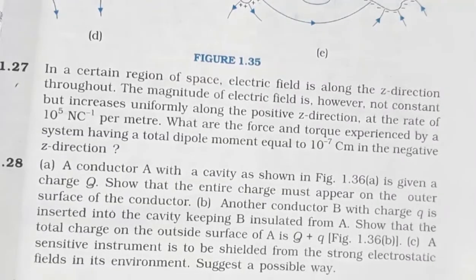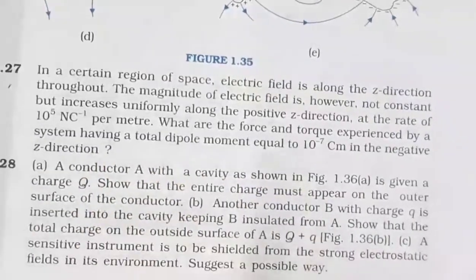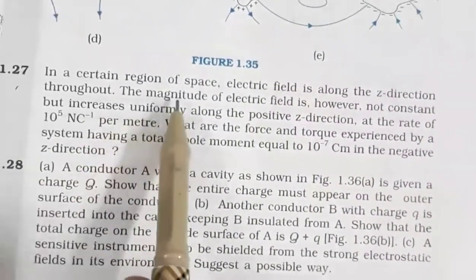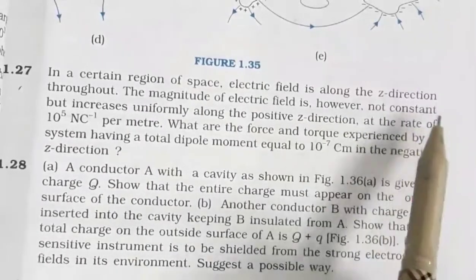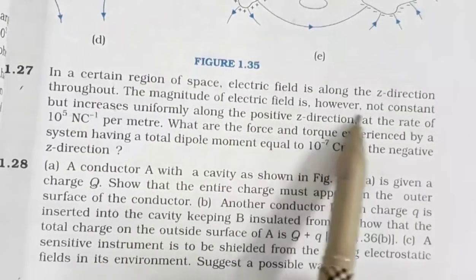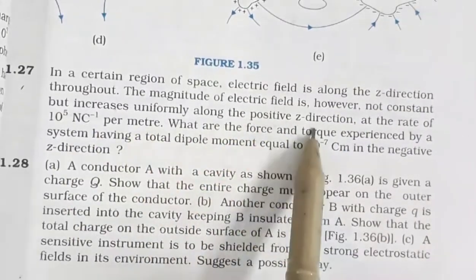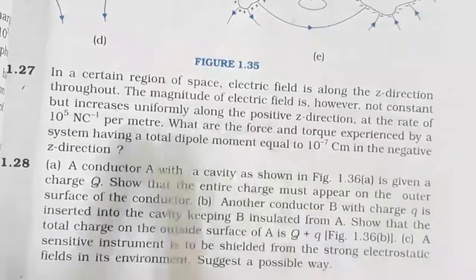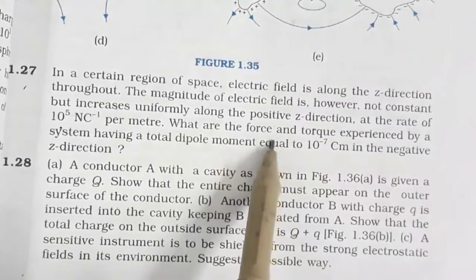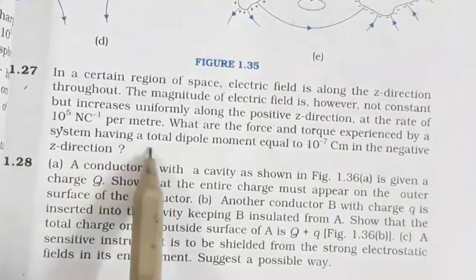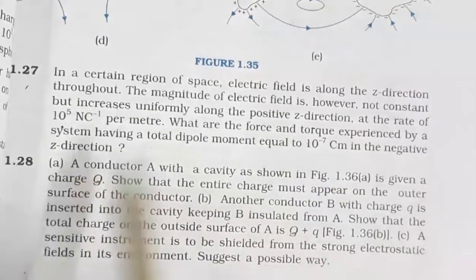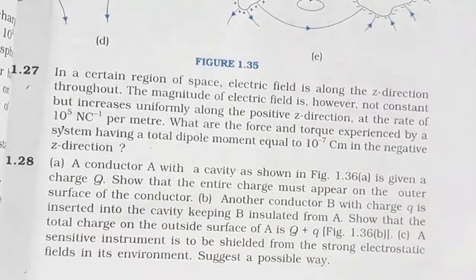Now let us solve question number 1.27 from the NCERT textbook, chapter Electric Charges and Fields, page 49. The question reads: In a certain region of space, the electric field is along the Z direction throughout. The magnitude of electric field is not constant but increases uniformly along the positive Z direction at the rate of 10⁵ Newton per coulomb per meter.